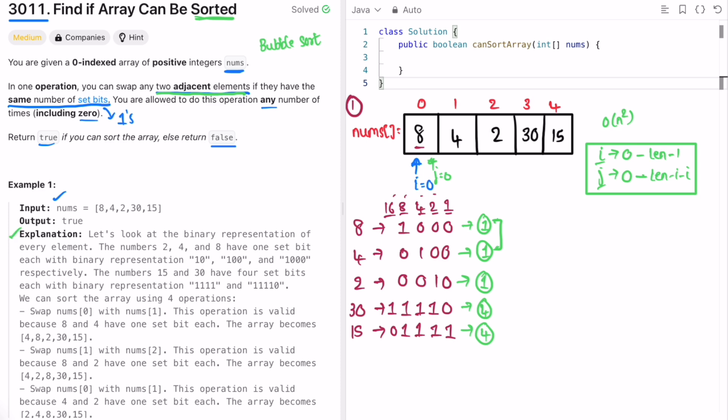Here if you read the explanation, first we are going to swap 8 and 4. Since both of them are having same set bits of 1, we can swap them. So let's swap them. So 4 and 8 is swapped and like in bubble sort we keep on doing that until this element reaches its position.